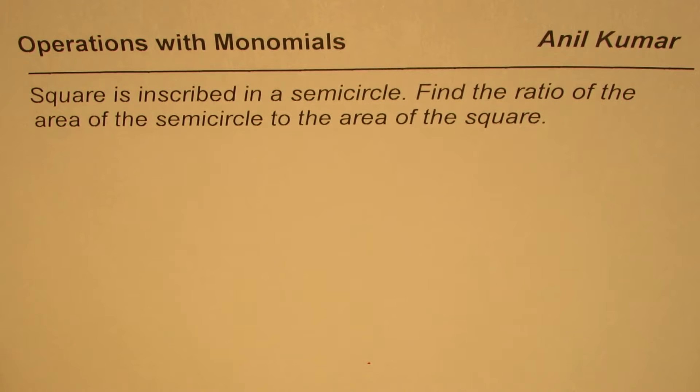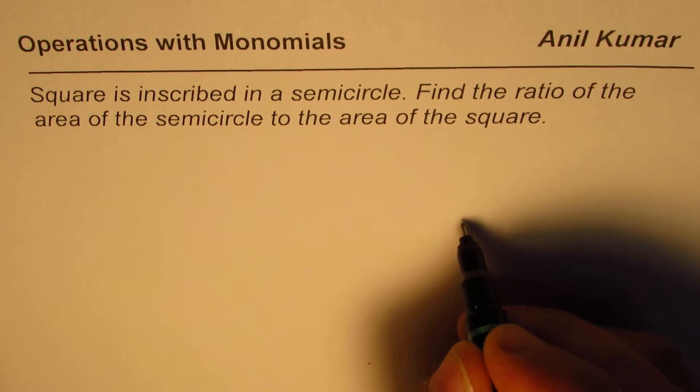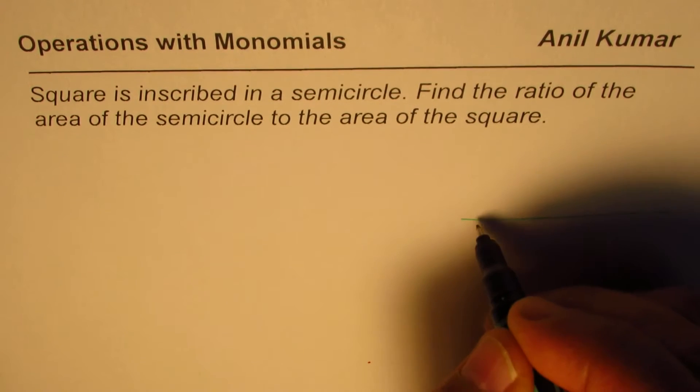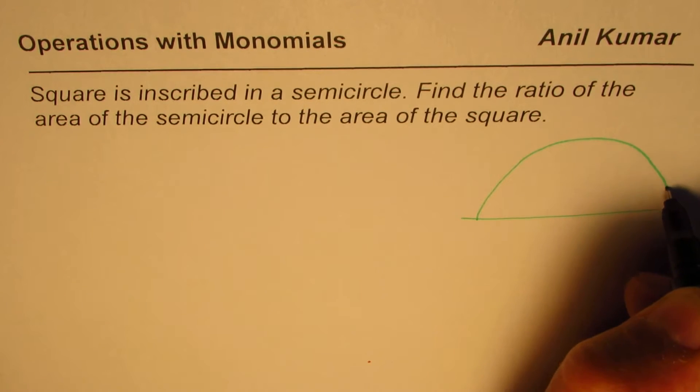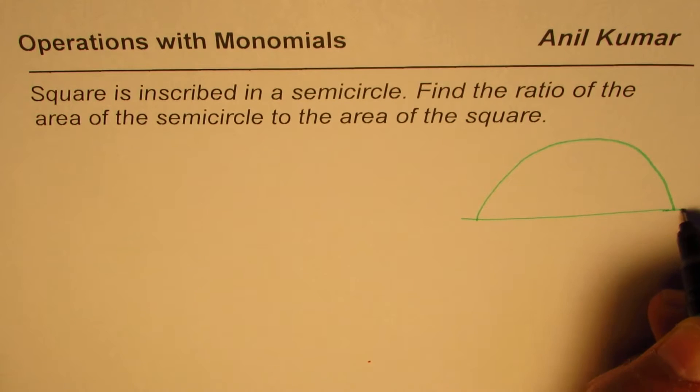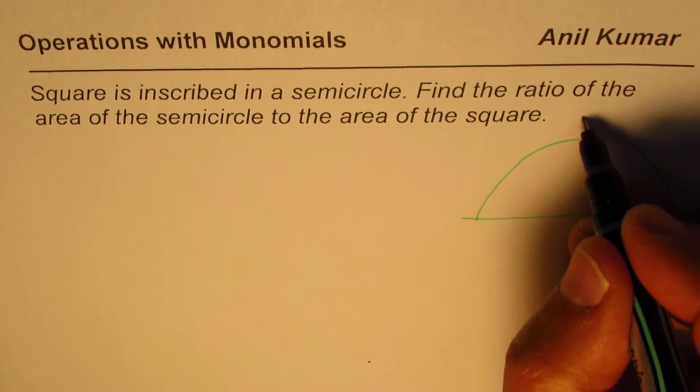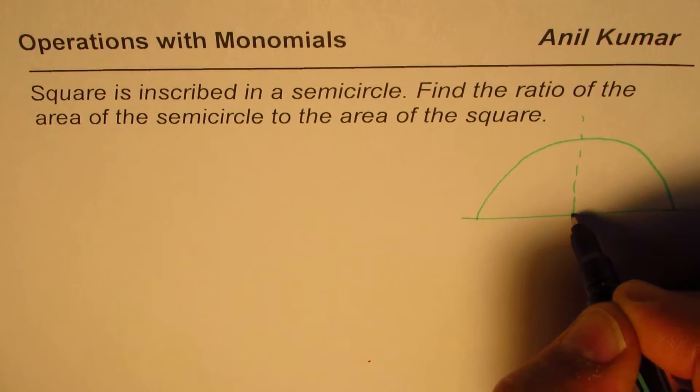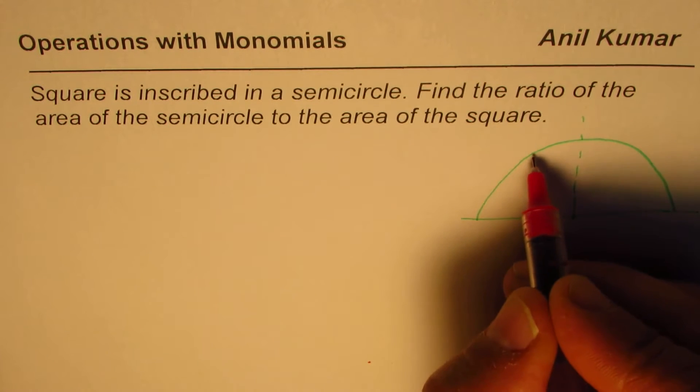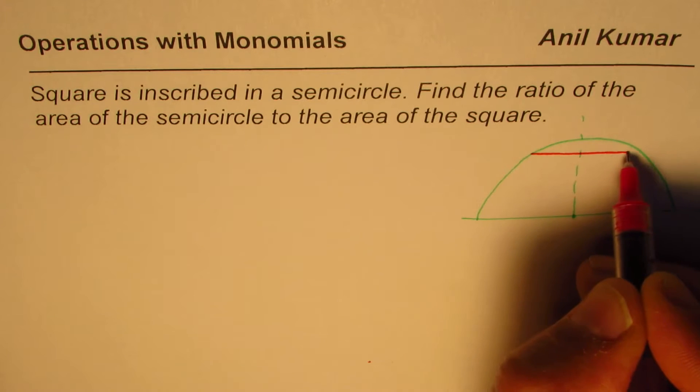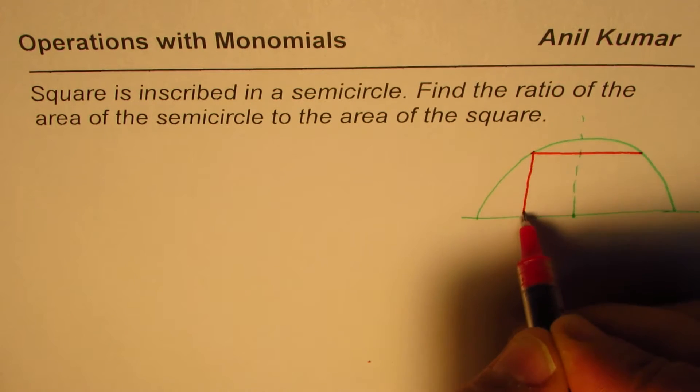Let me sketch it and then we'll discuss. So let's say this is the semicircle for us, and in this semicircle we will inscribe a square. That's the center. Now if we inscribe a square, let me be a bit careful in making it.